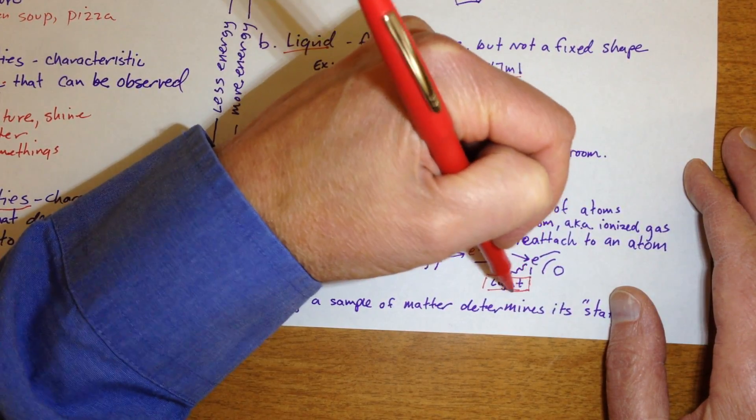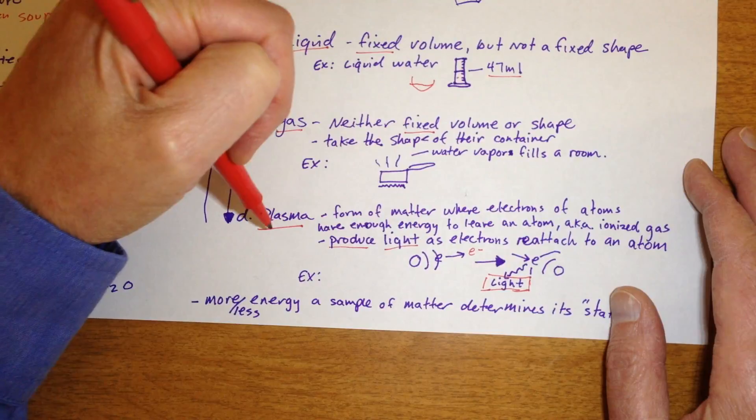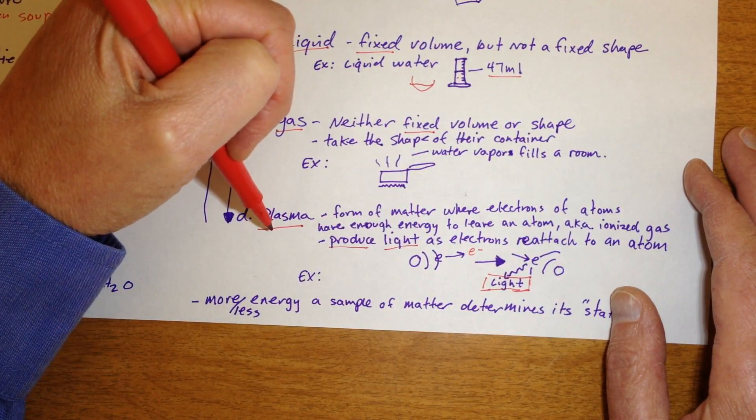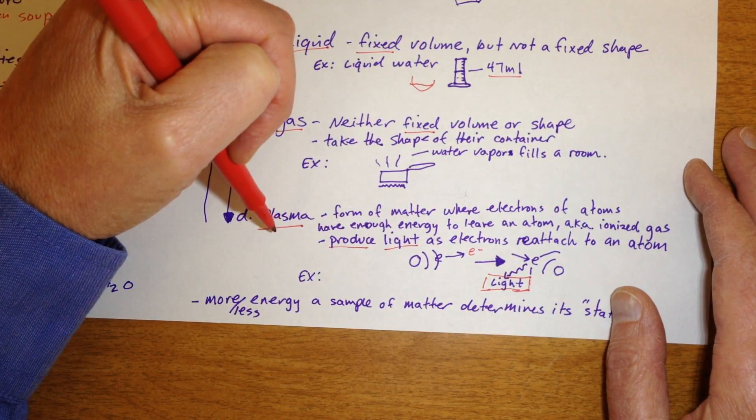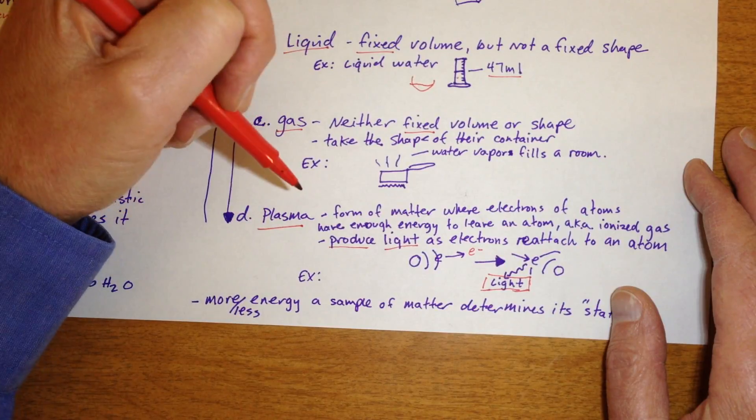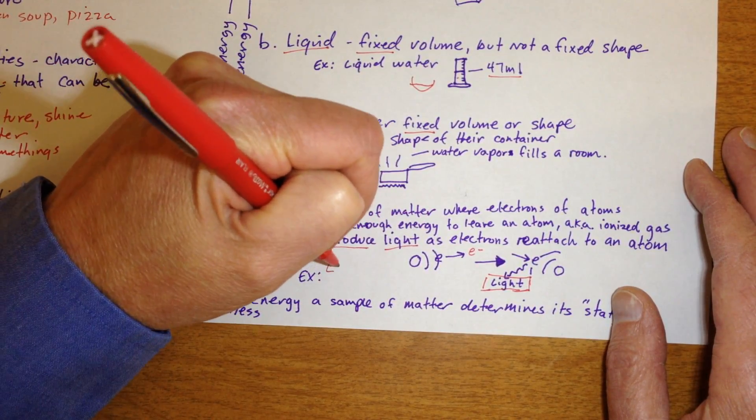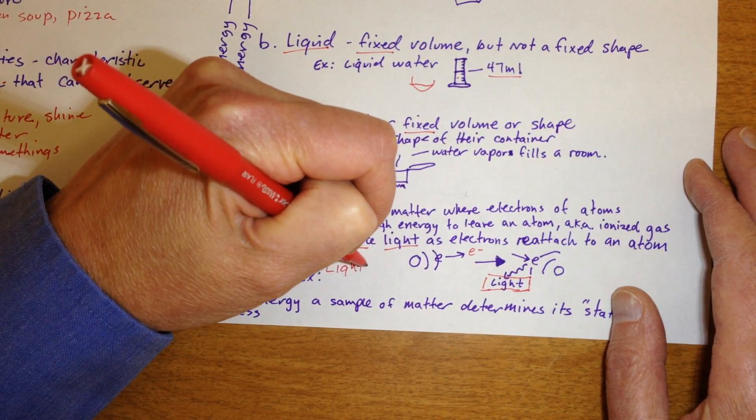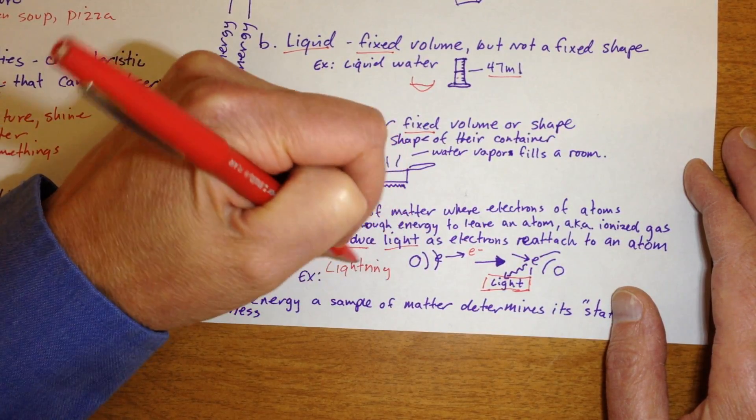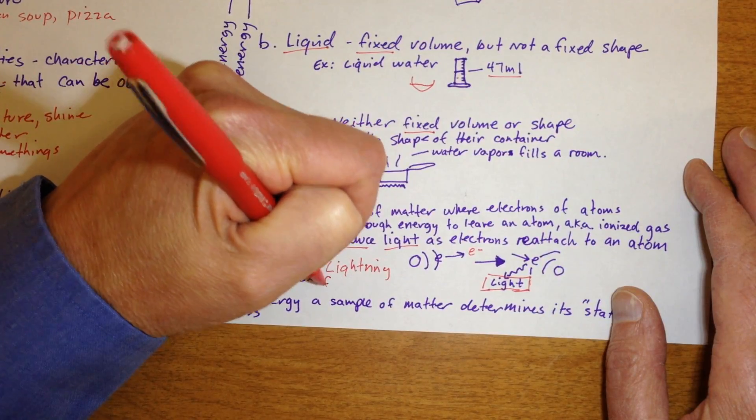So light produced by the sun, light produced by light bulbs is actually from a momentary movement of electrons, creating this state of matter called a plasma. Examples of plasma in our world would be lightning and fluorescent lights.